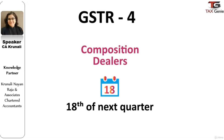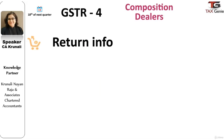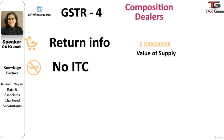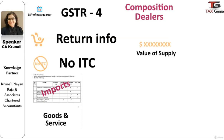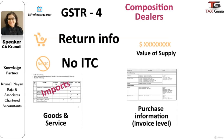Before discussing the details of GST Return 4, let us understand what composite dealers are. Composite dealers are dealers who calculate GST payable by paying output GST at a lower rate, and they will not claim input tax credit. The basic information to be keyed into this return includes the total value of supply made during the period, details of payment of tax, invoice-level purchase information, and the details of goods and services imported from outside India.